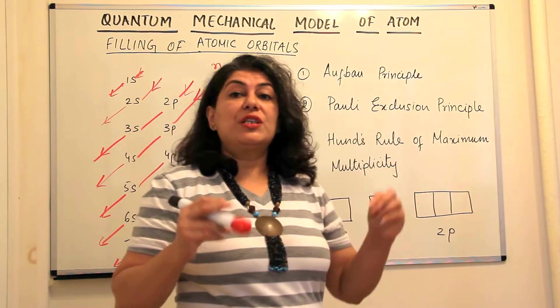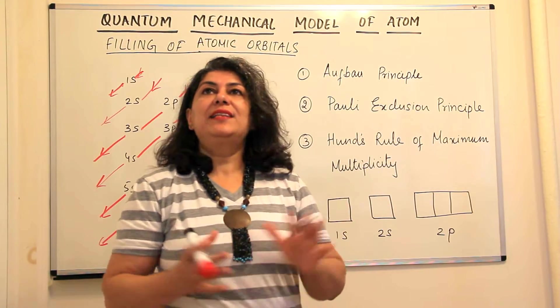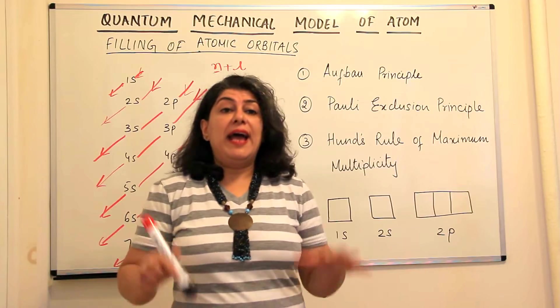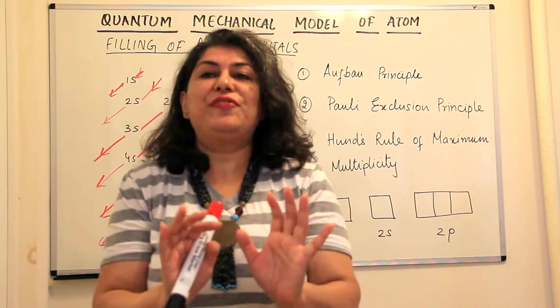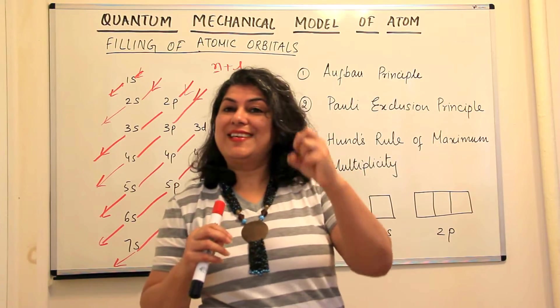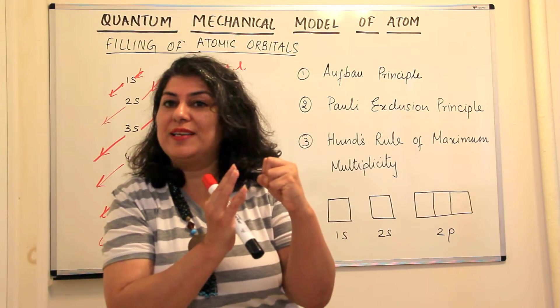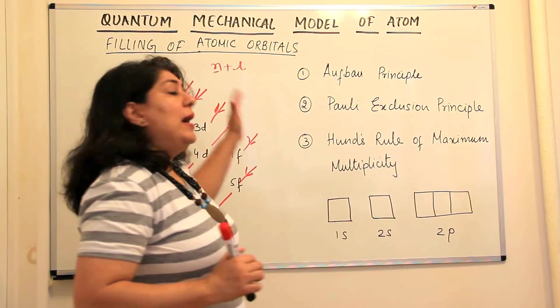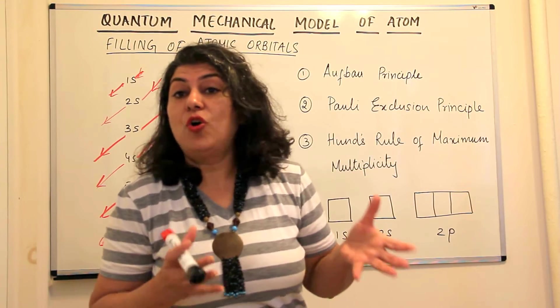Now how do electrons fill up in these orbitals? Well, imagine you're going for a show and it's the show of your favorite star and there are lots of fans of the same star and you go for the show. What is your intention? Your intention is to go to the front, right in front and be the closest to the star so that you can have a good view of the show. Now the nucleus is like that star and the electrons are like those fans. They want to be closest to the nucleus and they want to go to that orbital which has the lowest energy.